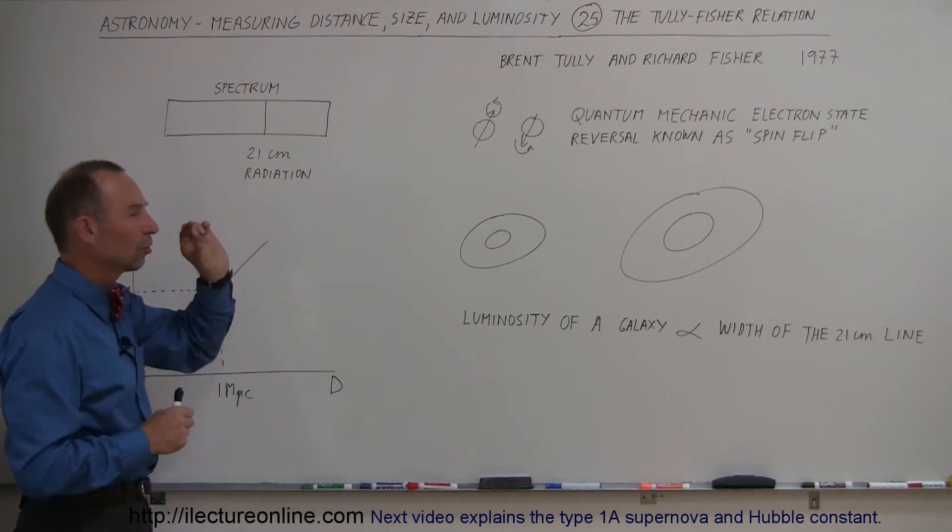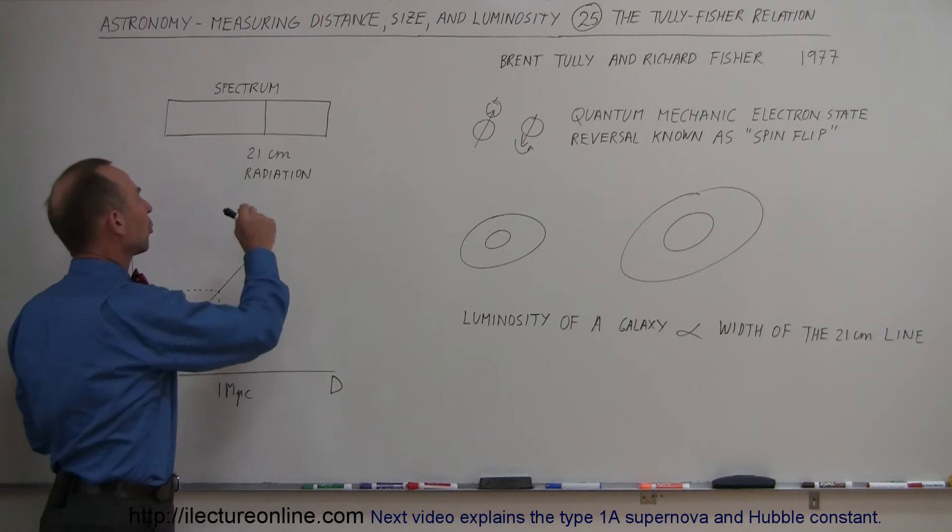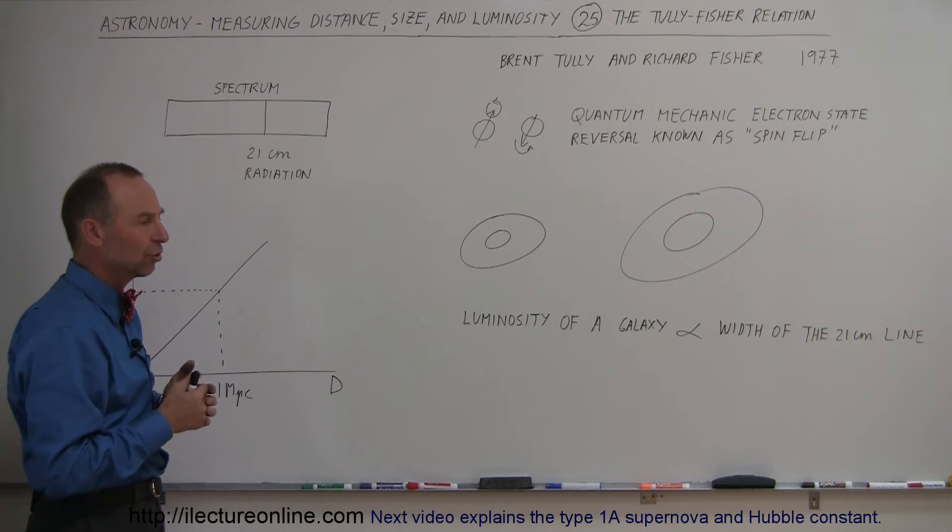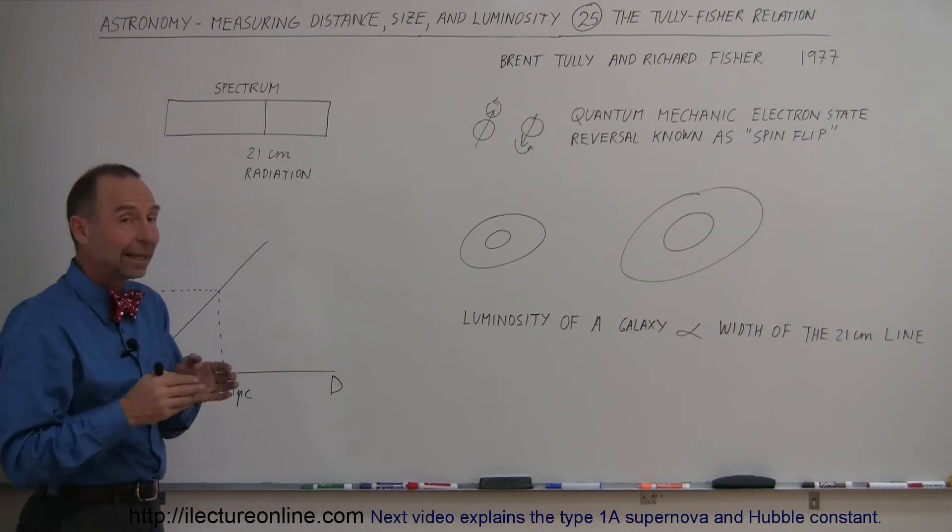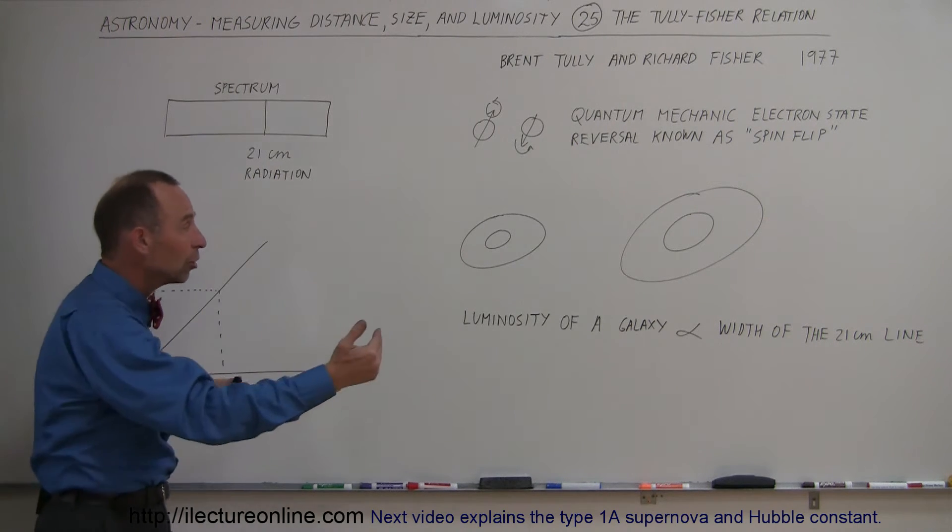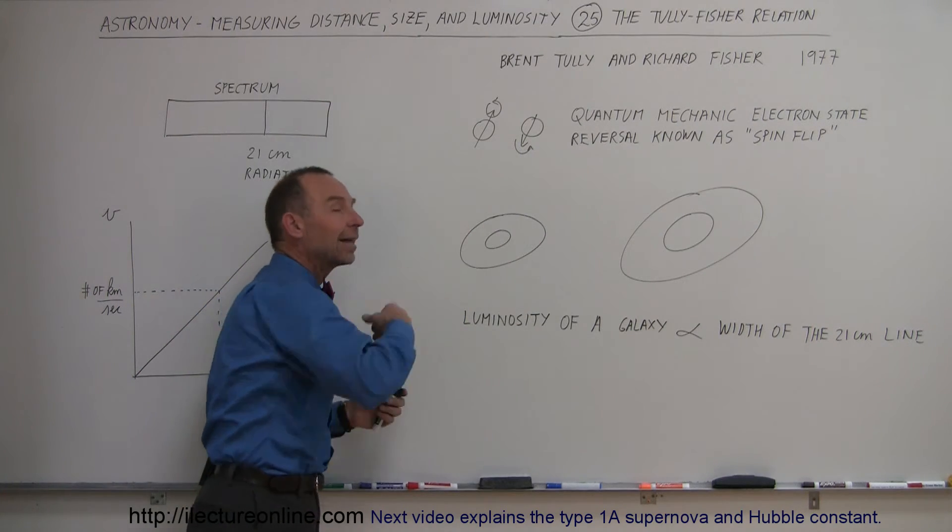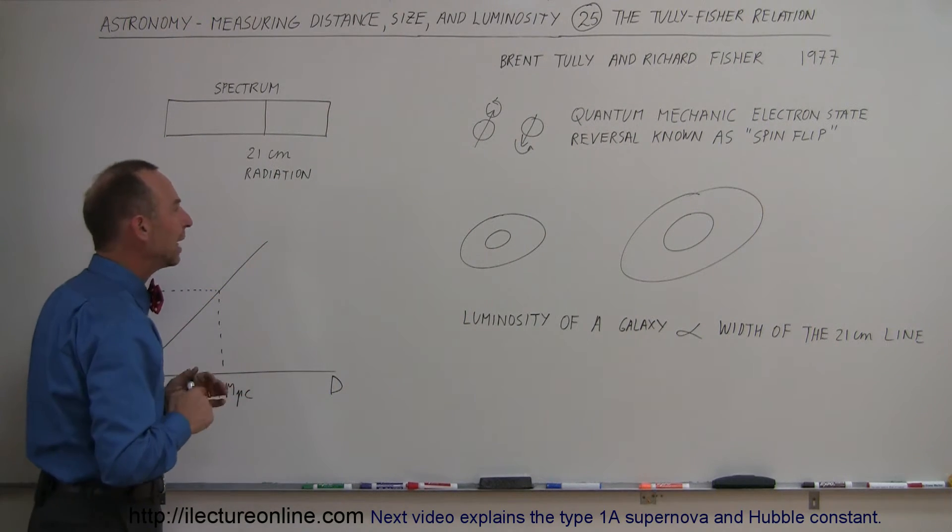they release a certain amount of energy equivalent to a 21 centimeter wavelength of radiation, which is between radio and microwave radiation. That radiation is able to make it through the dust and nebulas inside galaxies, so it's easily measured.